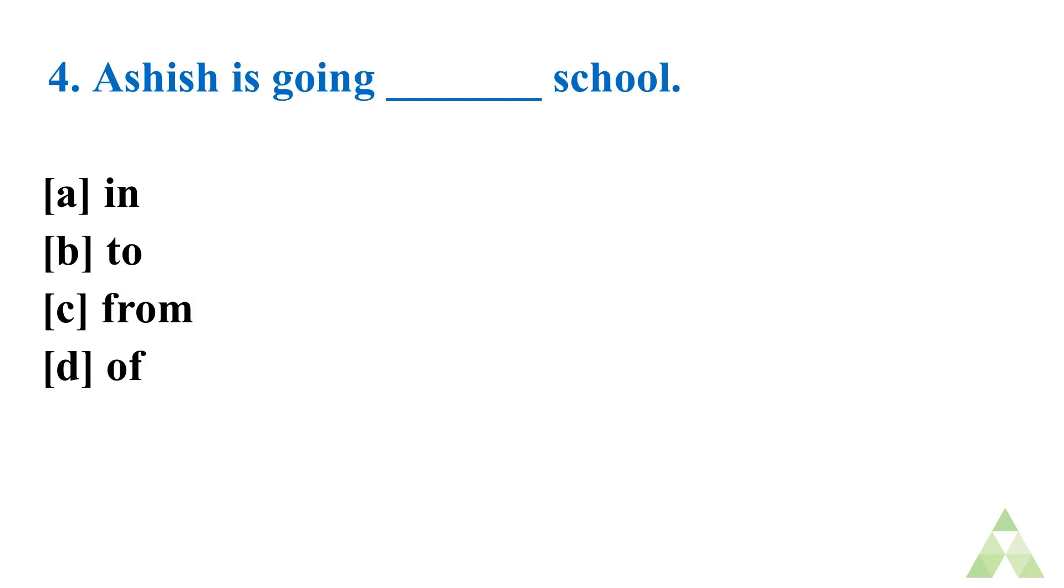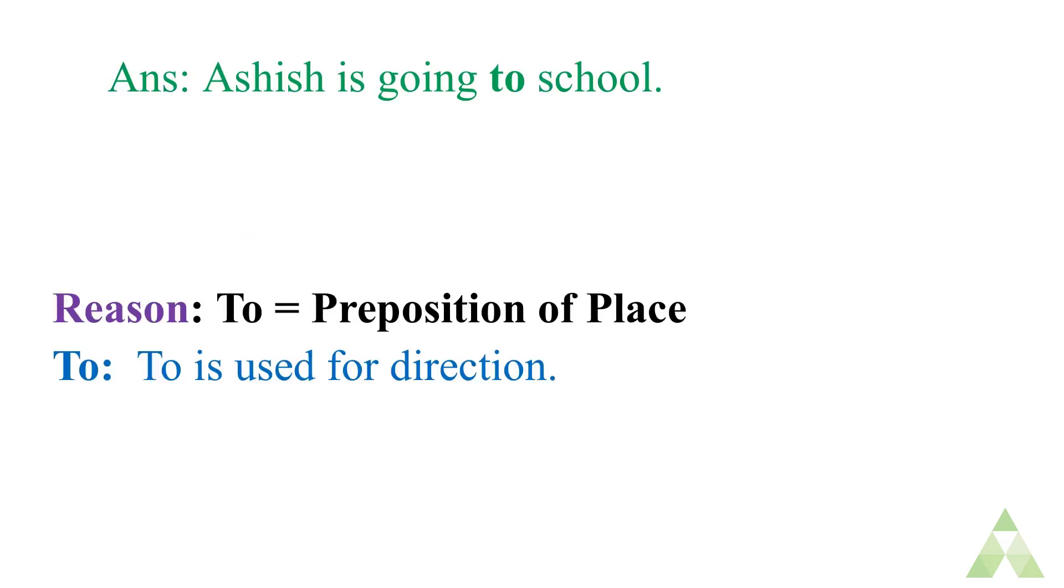Yes. All of you have written the right answer. Very good Abetians. The right answer is to. Ashish is going to school. Now let's know the reason. As usual we have known that this is I mean to is preposition of place and this is used for direction. Means where is Ashish is going. Ashish is going to school. Means towards the school.